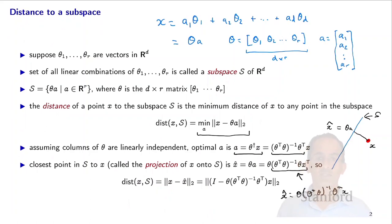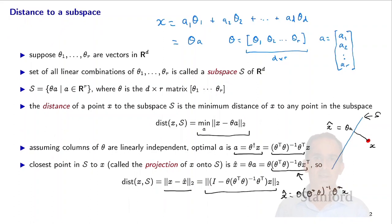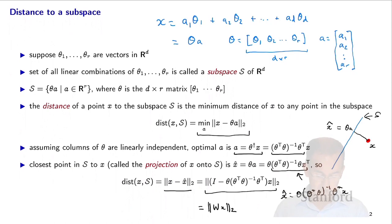The distance between x and the subspace is the norm of x minus x-hat. Substituting x-hat gives a somewhat complex expression. But if we call the matrix W = I minus Theta (Theta^T Theta)^{-1} Theta^T, the distance is simply the norm of W times x.